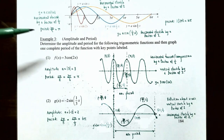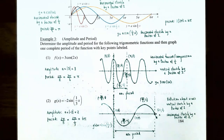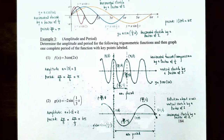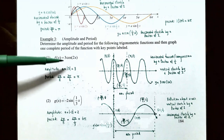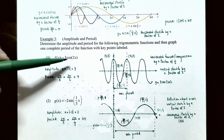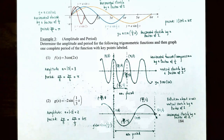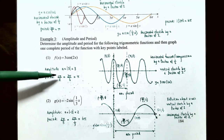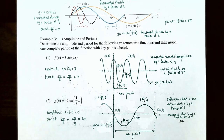Example 3: Amplitude and Period. Determine the amplitude and period for the following trigonometric functions and graph one complete period with key points labeled. For f(x) = 3·cos(2x): the amplitude is |3| = 3, so the graph ranges between y = -3 and y = 3. The period is originally 2π for the cosine function, but dividing by k = 2 gives a period of π.